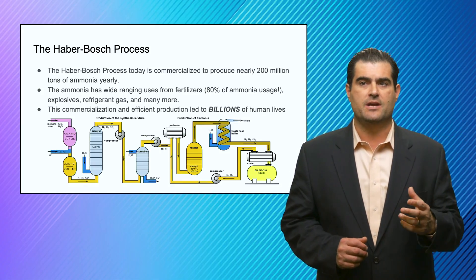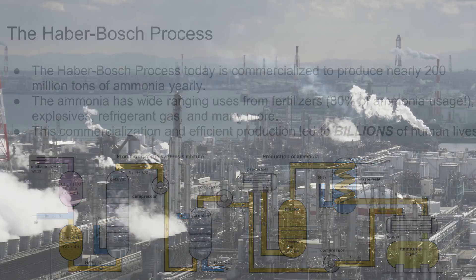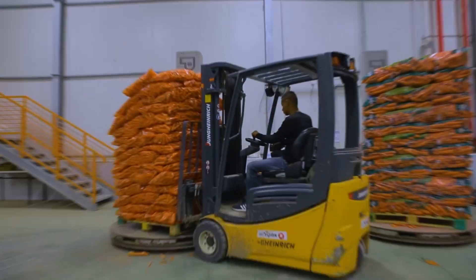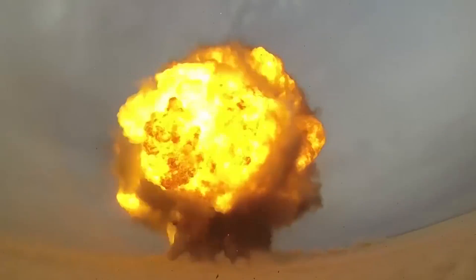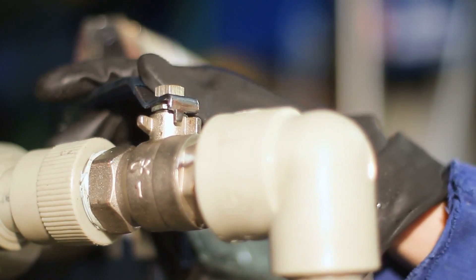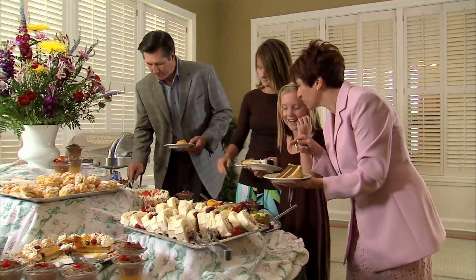The Haber-Bosch process shown here is used to make literally 200 million tons of ammonia every single year. Ammonia has wide ranging uses from fertilizers, where it uses mostly 80% of the ammonia, to explosives, to refrigerant gases and many, many uses. The commercialization and efficient production has led to the feeding of billions of humans.